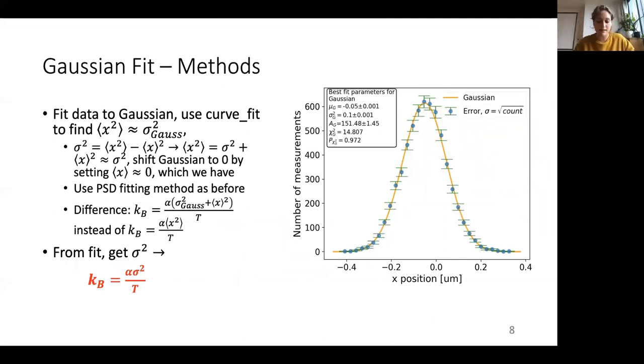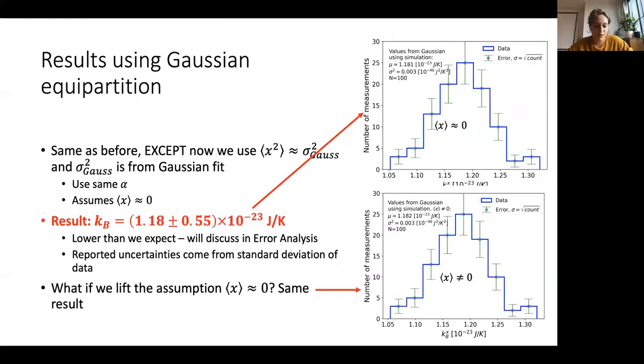The second method of calculating kb is instead of just taking a brute force average of the x squared values, we fit the position data to a Gaussian, which I've shown here to the right. And we use the variance of the Gaussian instead of the average value of x squared. And this is valid if we just expand the definition of the variance, which I've done right over here. And if we assume that the average value of x is close to zero, which I'll verify in the next slide. And then we can just think of this as just essentially centering the Gaussian at zero because the variance should not affect where the Gaussian is centered. So all we do is we replace the average value of x squared with the variance of the data to calculate our new kb, again using the equal partition theorem. So the result that we get from doing this is pretty much the same as what we got for our first method, which is about 1.18 times 10 to the minus 23 joules per Kelvin. And this is still lower than we expect and is also almost the same as the brute force method that we listed first.